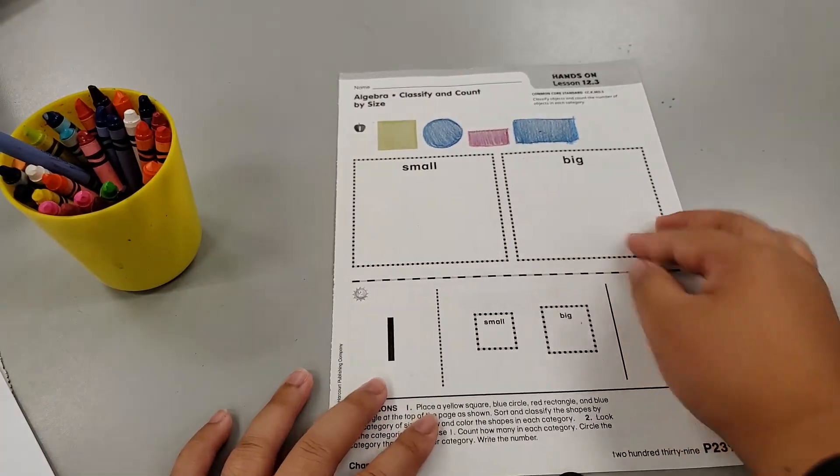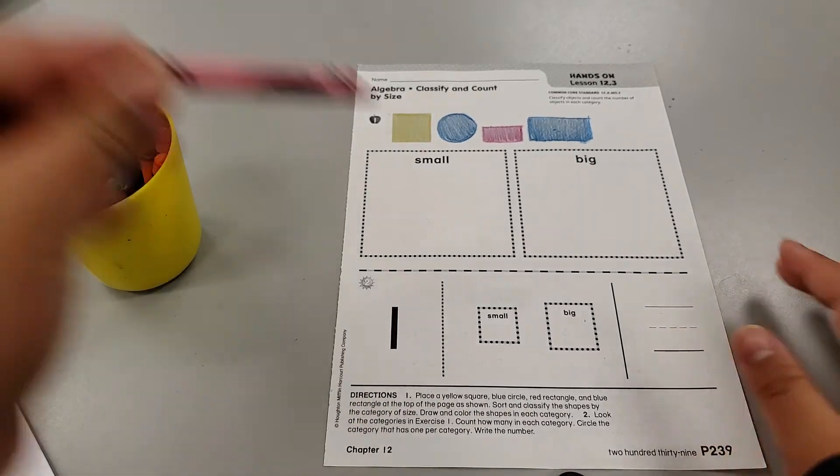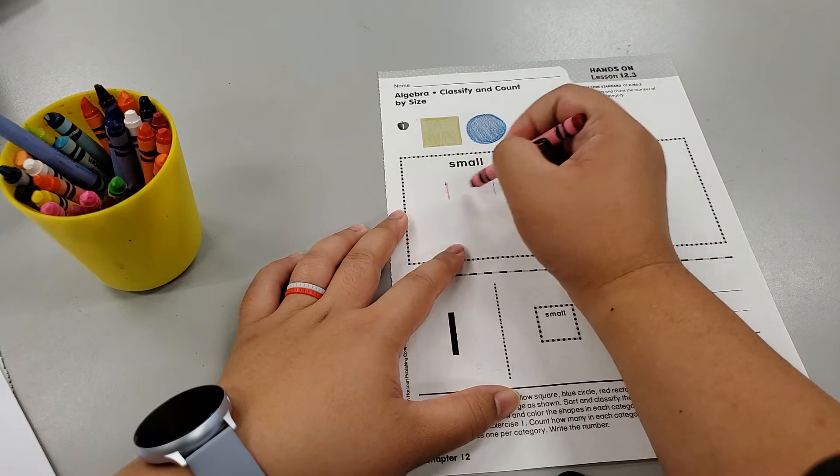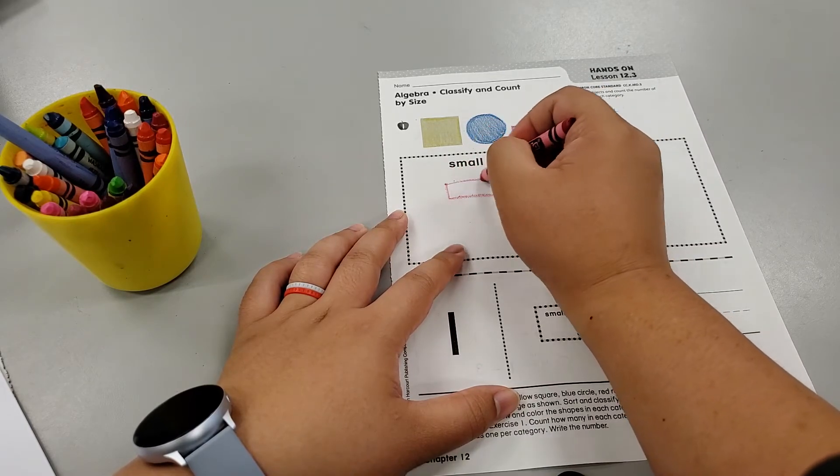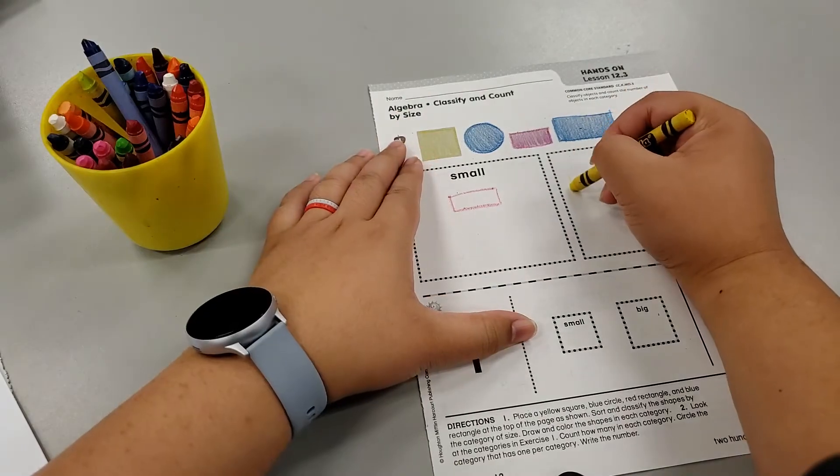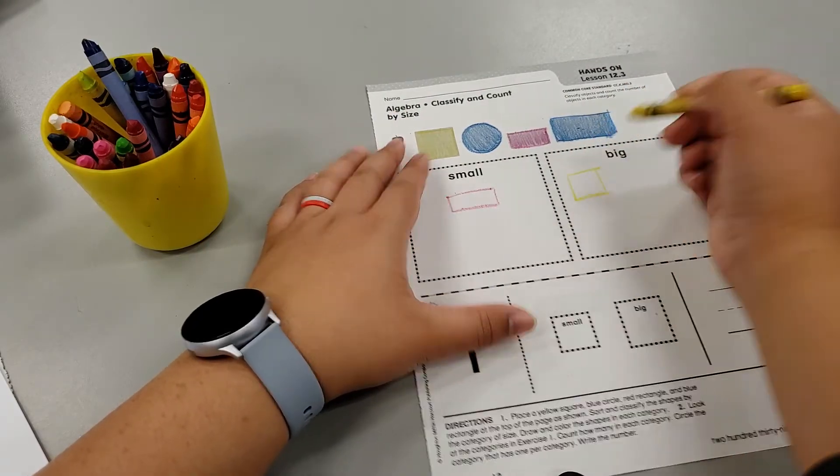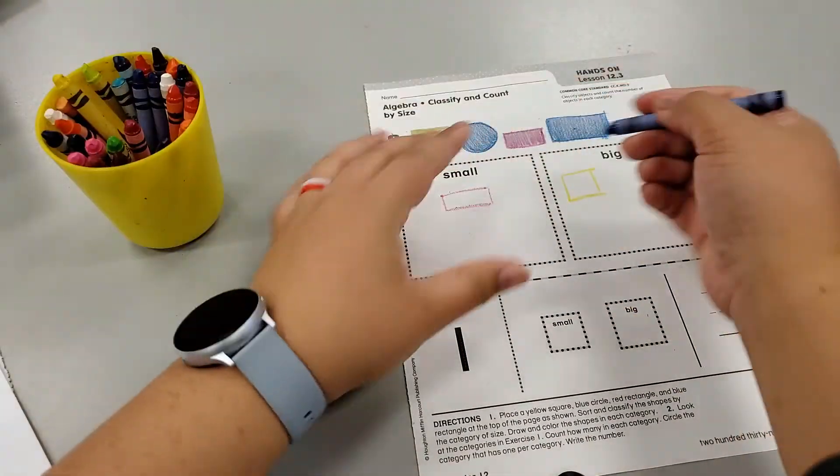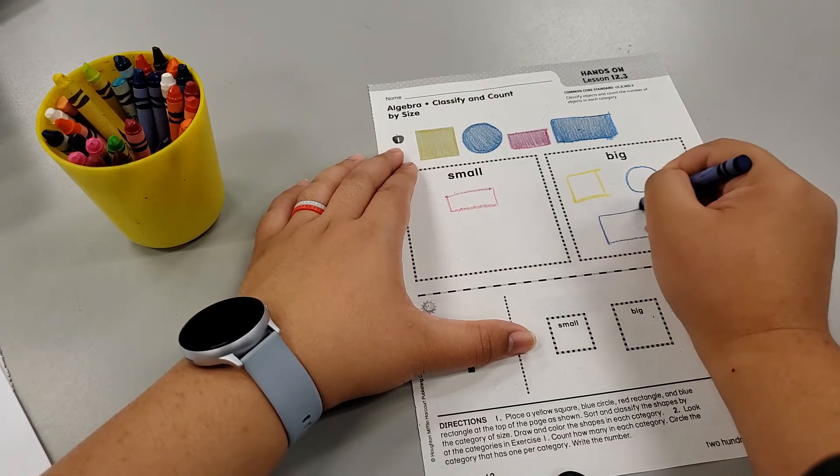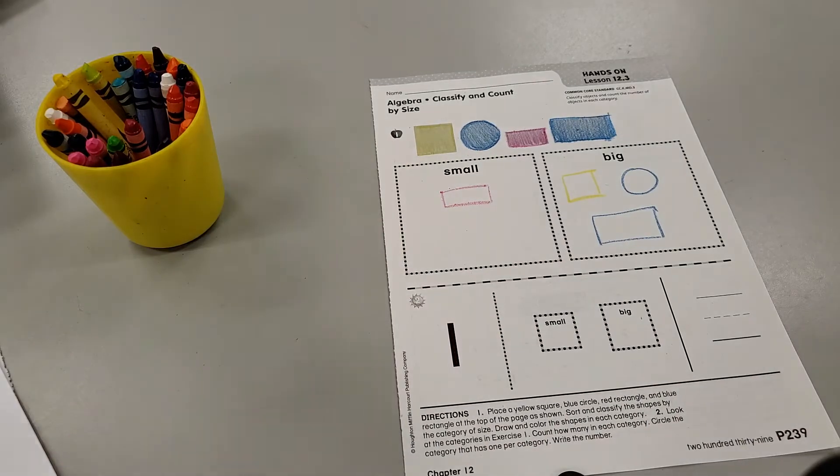Which one do you think is a small shape? Just this itty-bitty rectangle. The other shapes are plenty big. So we're going to add them in the space that says big.